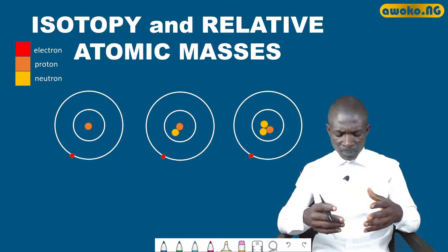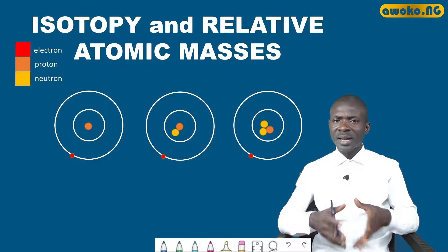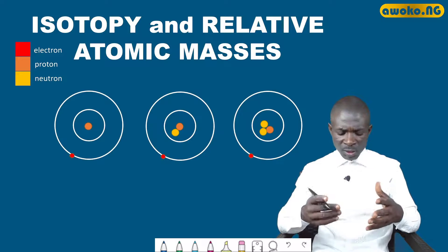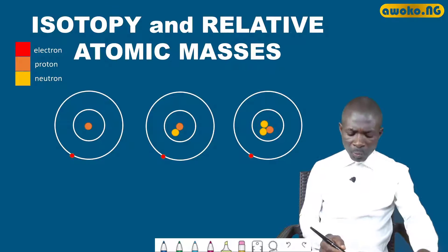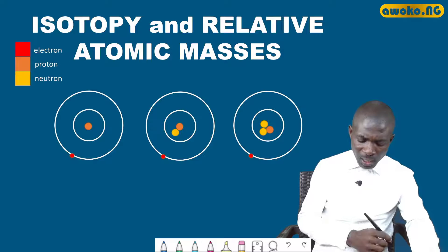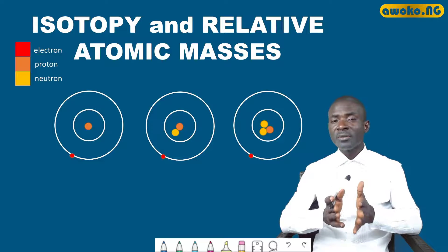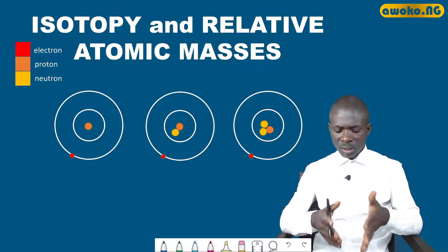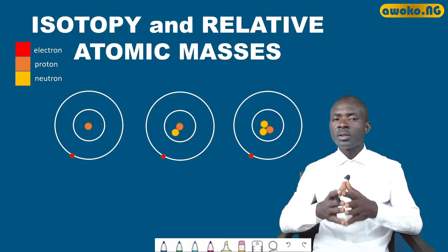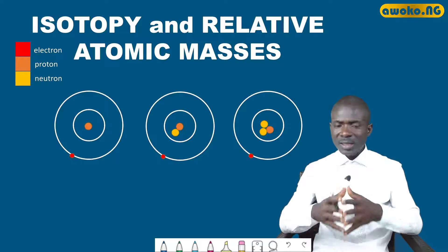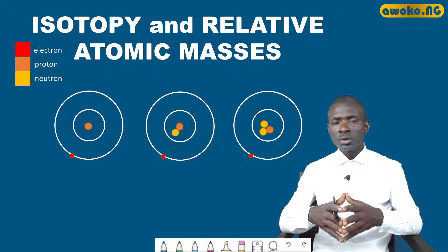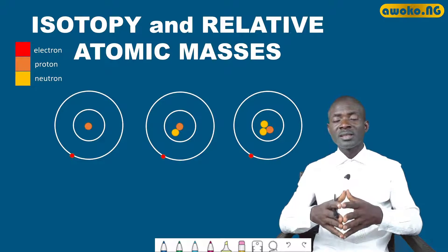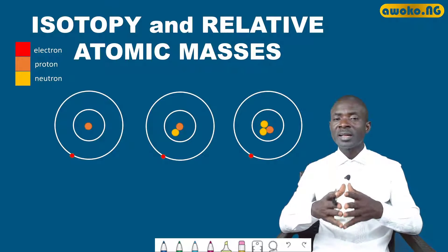As shown on screen, we have hydrogen indicating three isotopes. In the first isotope, hydrogen has one proton without a neutron — it has one proton and one electron. In the second case, it has one proton, one neutron, and one electron. In the third case, it has two neutrons and one proton. The number of protons is the same in each isotope, while the number of neutrons differs.